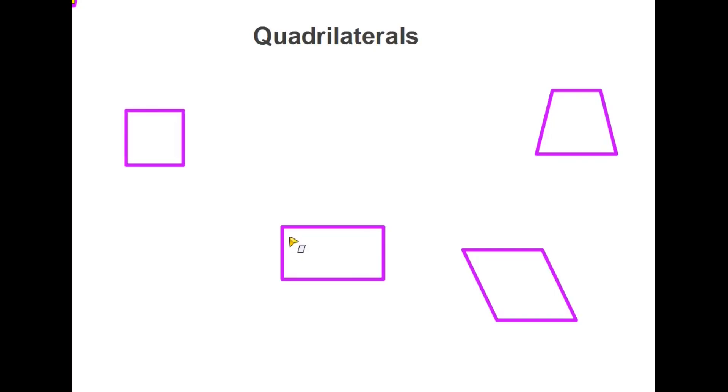The first set of shapes that we're going to have a look at have one thing in common: they're all four-sided shapes and therefore they all come under the heading of quadrilaterals.